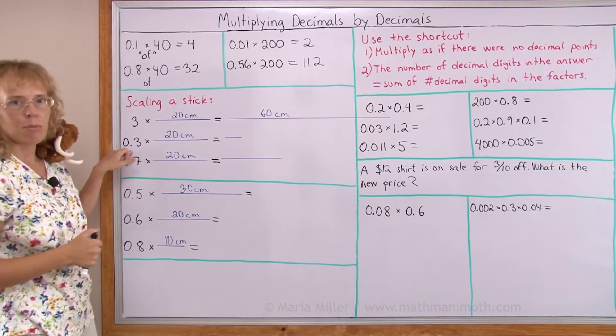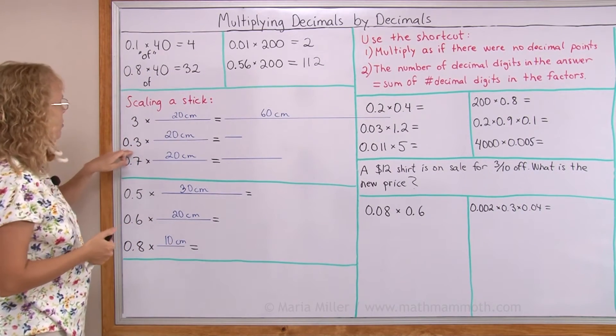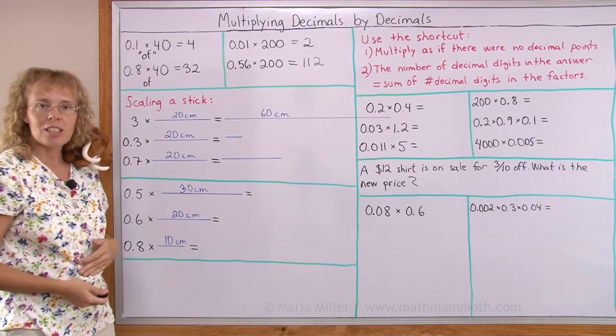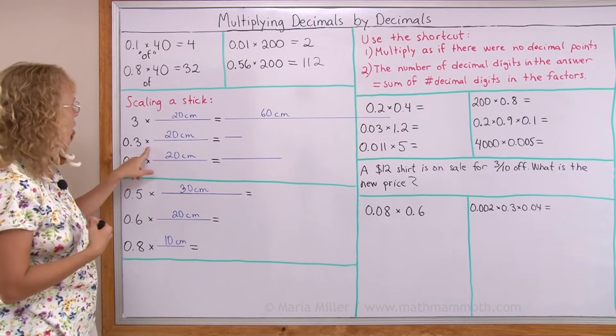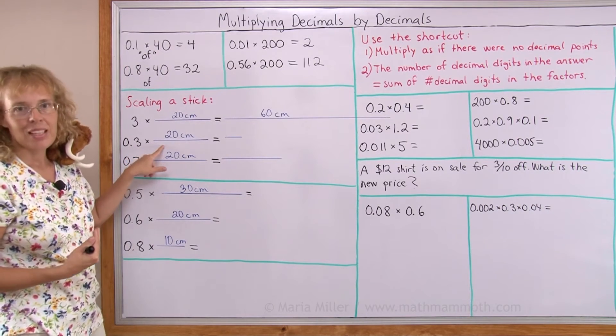But what if I have a decimal number here? I multiplied 0.3 times 20 centimeters. Think of the of again. Think of this as 3 tenths of 20.